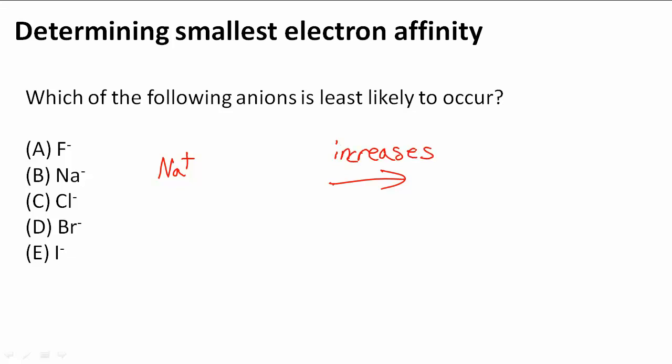So elements with the smallest electron affinity have to be on the left because when we go from right to left it decreases.